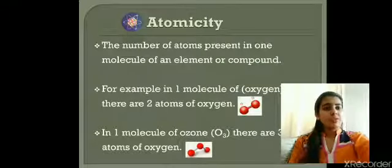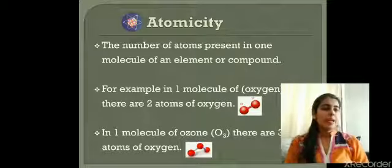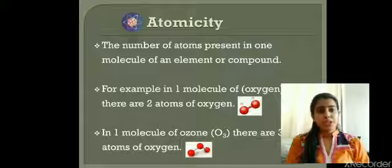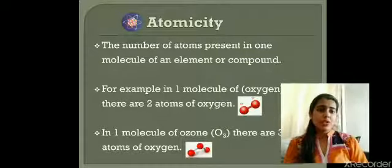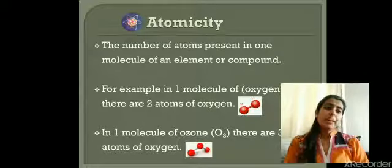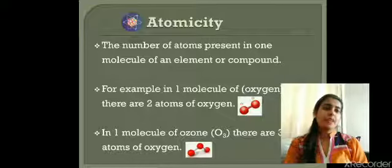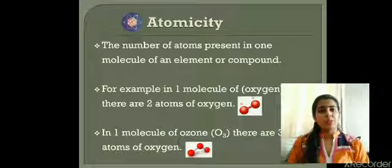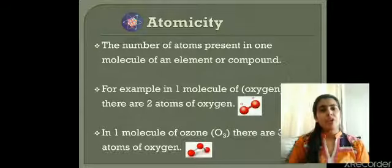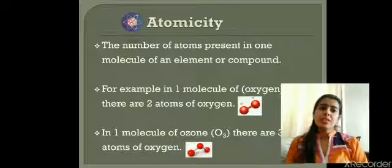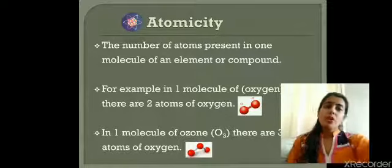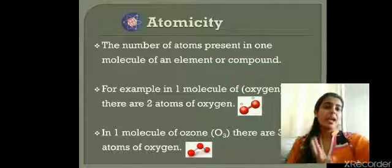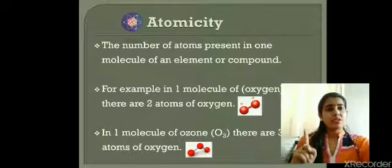Coming to atomicity: the number of atoms present in one molecule of an element or a compound is called atomicity. For oxygen O2, it contains two atoms of oxygen, so atomicity is two. For ozone O3, three atoms of oxygen, so atomicity is three. For water H2O, two atoms of hydrogen and one atom of oxygen — three atoms in total — so atomicity of water is three.